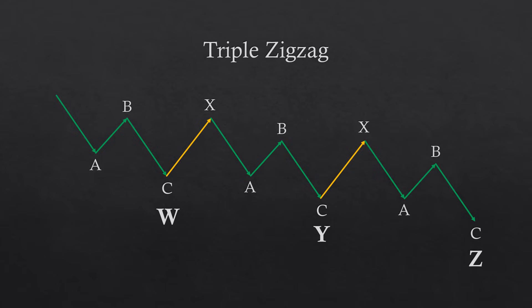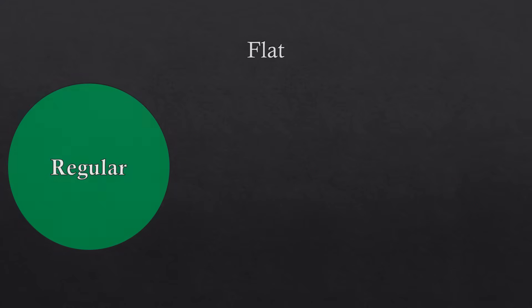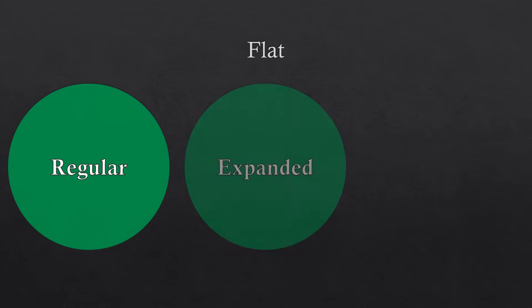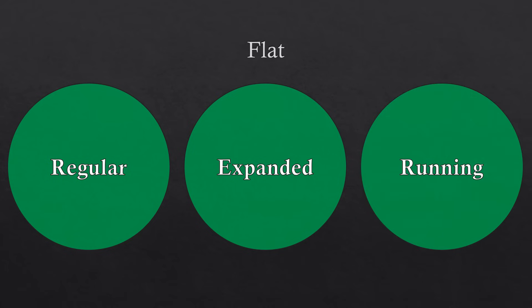The triple zigzag is composed of three ABC formations connected by two waves X, following the W, X, Y, X, Z pattern. The third ABC pattern after the second wave X is labeled as Z. From these formations, it's easy to see that the possible combinations of corrective waves can get pretty complicated. The second type of corrective wave is the flat, which has three subtypes: the regular flat, the expanded flat, and the running flat.